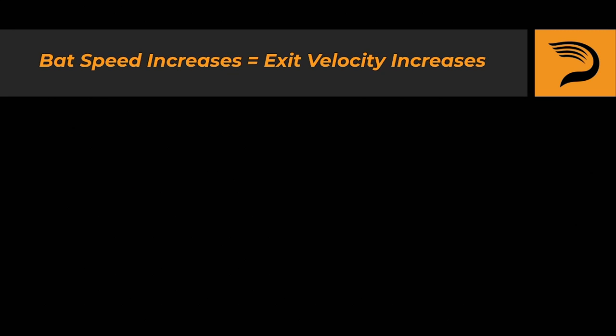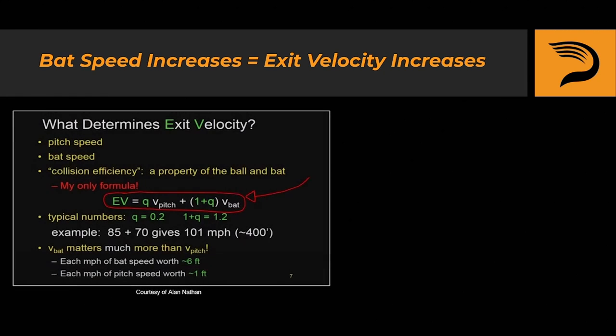The reason bat speed stands atop Driveline's big three in order of importance is because of the linear relationship it shares with exit velocity. Let's take a look at a couple of examples to see how increasing your bat speed can increase your exit velocity as well.